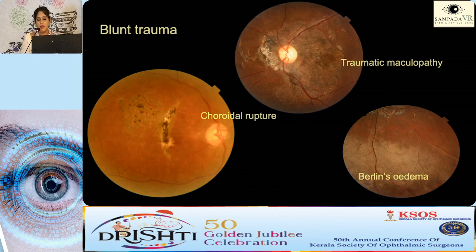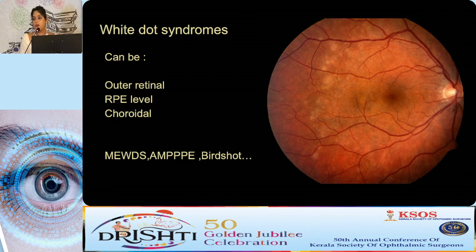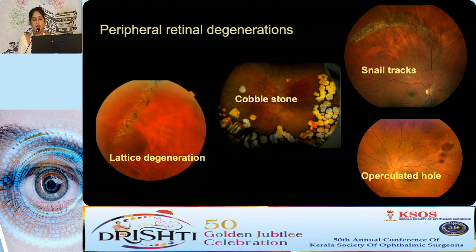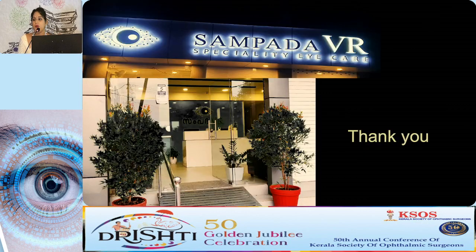Dobson swarms are not that uncommon. Peripheral retinal degenerations like lattice degeneration, paving stone, cobblestone, snail tracks, and operculated holes — holes must be treated as soon as possible. Lattice with suspicious holes should have regular checkup. That, in a nutshell, covers fundus findings for the general ophthalmologist.